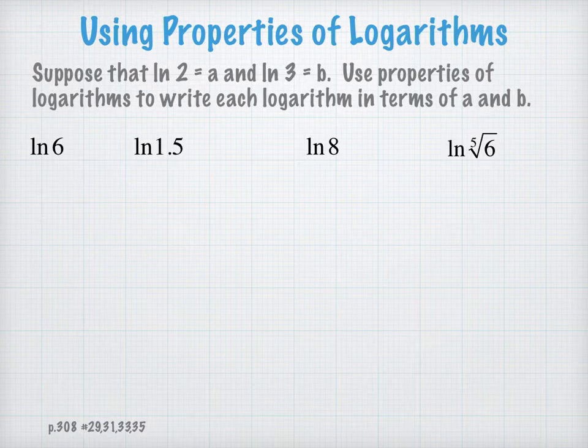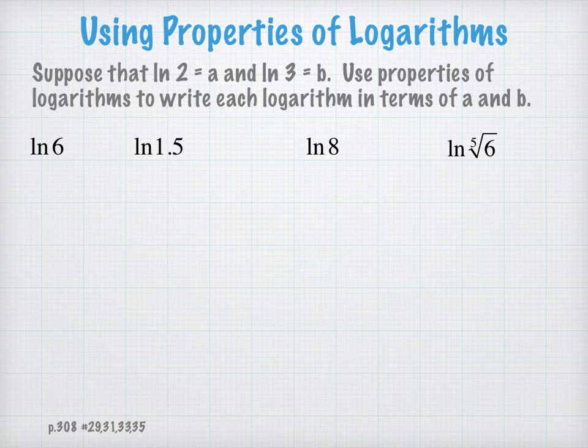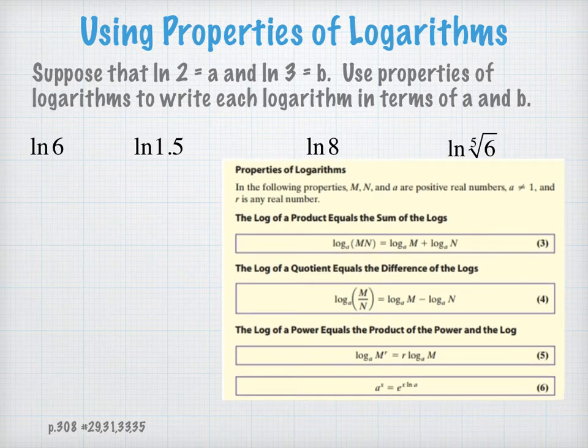Now let's use properties of logarithms to write each logarithm in terms of a and b, where the ln of 2, the natural log of 2, is defined as a, and the ln of 3 is defined as b. Here are our properties that we'll be referring to. What we can do for the number 6 is you want to think, how can I represent 6 in terms of 2 and 3?